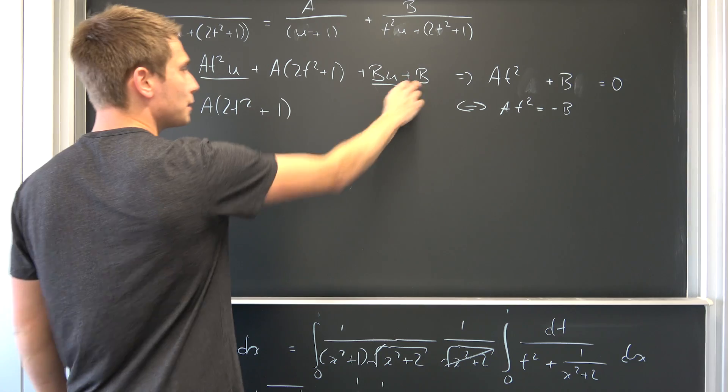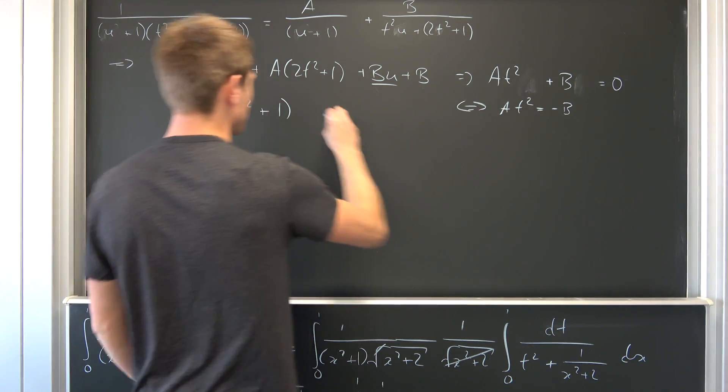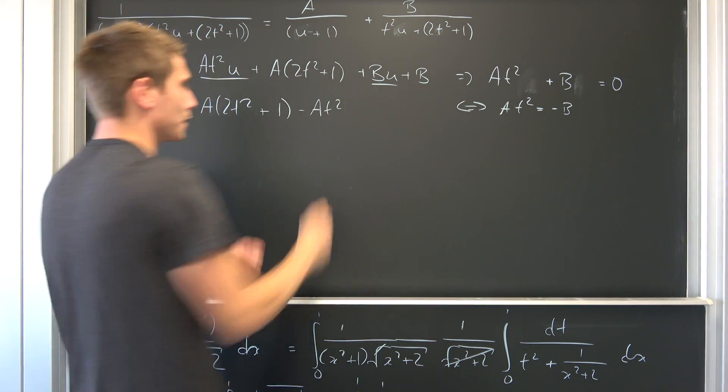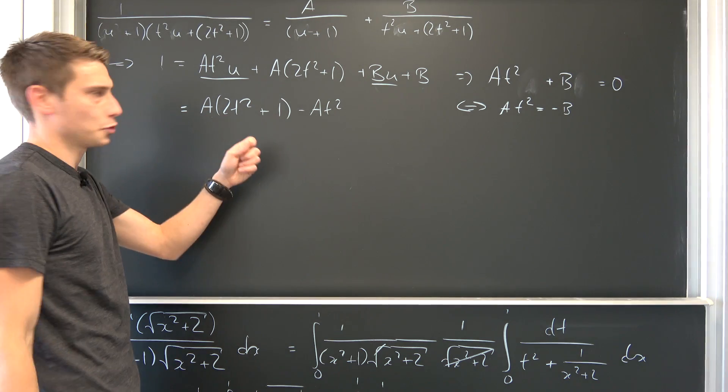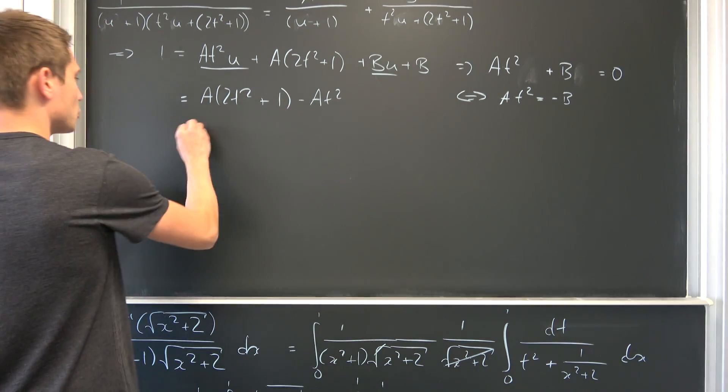You can factor out the A on both terms, get rid of one of those t squared terms. That also means that 1 is now nothing but A times t squared plus 1.